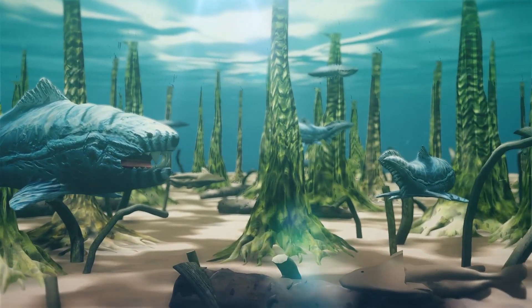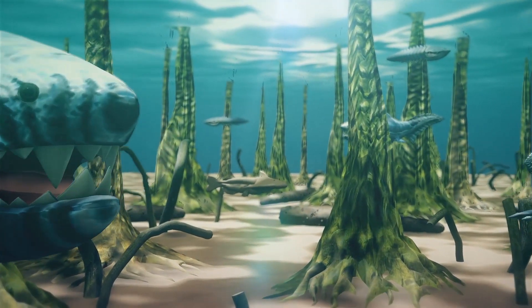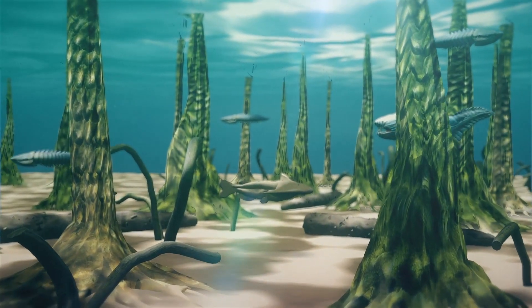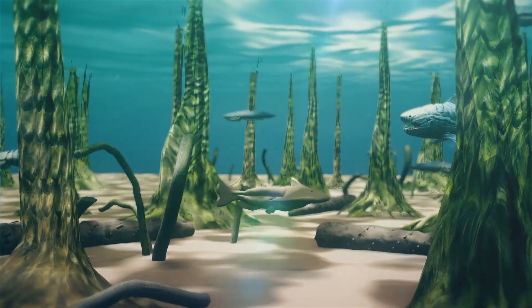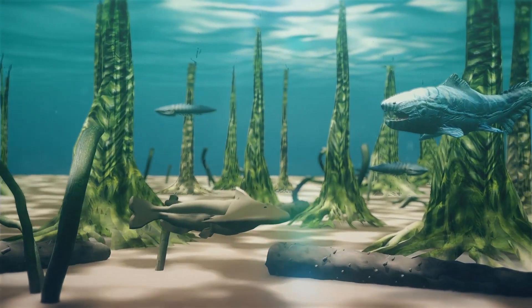The Devonian period lasted from 419 million to 359 million years ago. It is often known as the Age of Fishes, as fish underwent substantial diversification during the period.